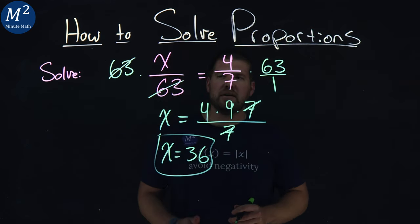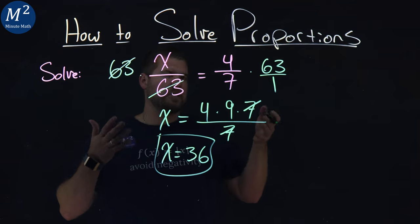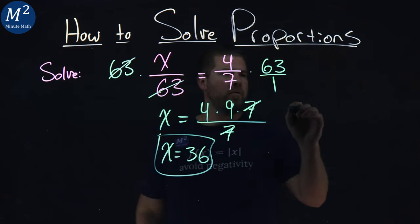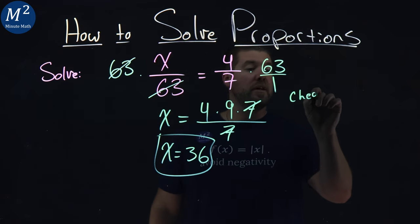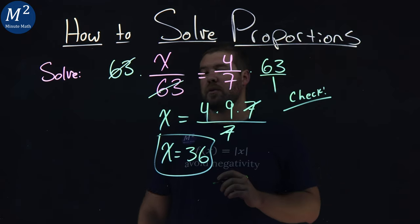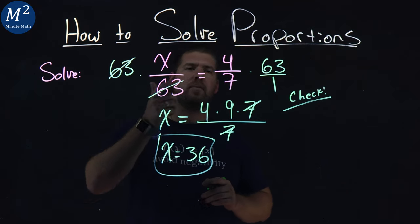So, we've got our x value here. How can we check to make sure that this was correct? Well, if we want to check it here, let me write the word check, just so we know what we're doing. I'm going to rewrite my proportion here.